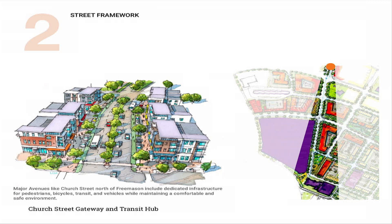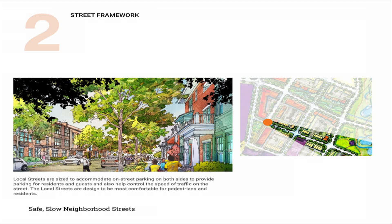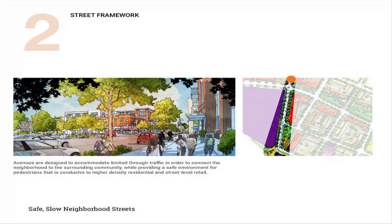On a major avenue like Church Street north of Freemason, there are dedicated bike lanes on both sides, landscaping separating the two directions, wide sidewalks, and plenty of room for tree roots so we have tree canopies and shade. On local streets: parking on both sides, very narrow — super comfortable for families to walk. On avenues designed for limited through traffic, we keep them tight enough that people are not cutting through the neighborhood, while still being an environment where retail can thrive.